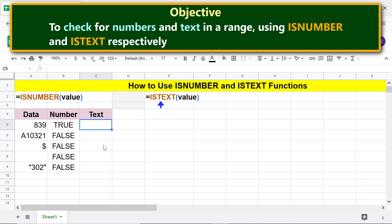Type equals I-S-T and select ISTEXT. For value, click this cell, press Enter. Copy the formula to these cells.